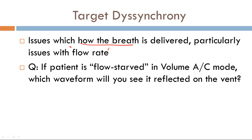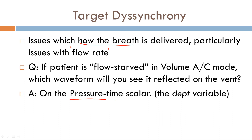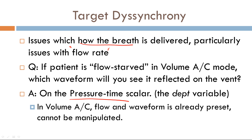The answer is you will see it reflected on the pressure-time scalar — the dependent variable. In volume AC, flow is your target variable. It's preset by you the operator and cannot be manipulated. However, the pressure scalar will be affected in target dyssynchrony.